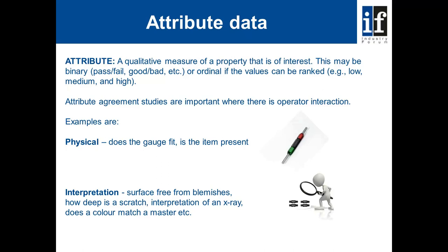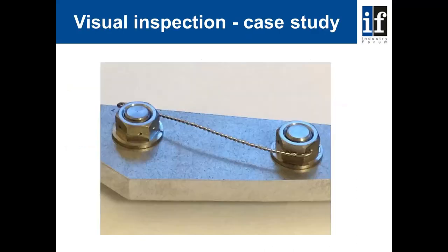Attribute agreement studies are important where there is operator interaction. Examples would be physical — does the gauge fit, is the item present — or interpretational, such as whether a surface is free from blemishes, how deep is a scratch, the interpretation of an x-ray, or whether a colour matches a master.